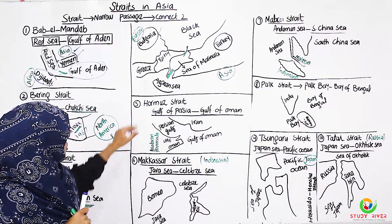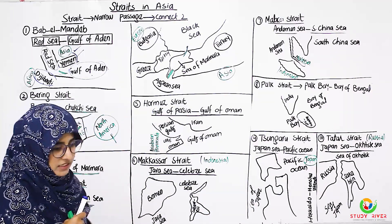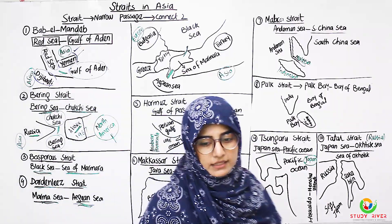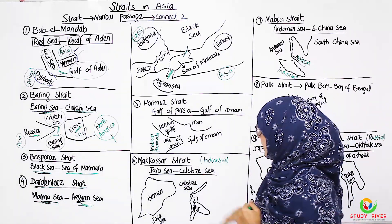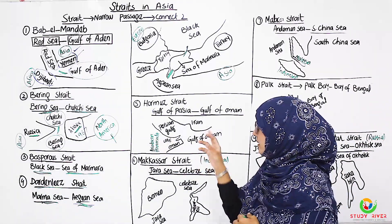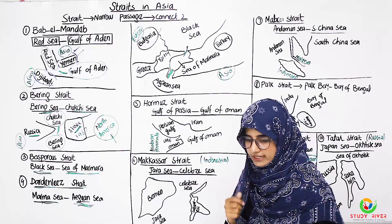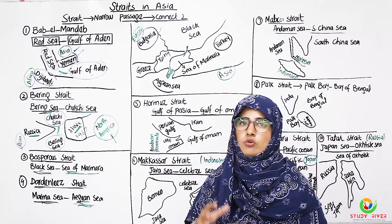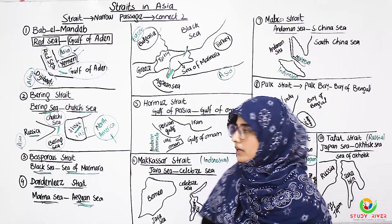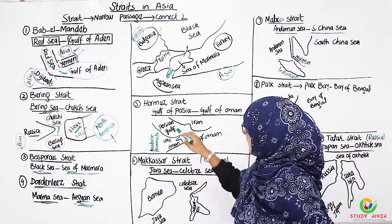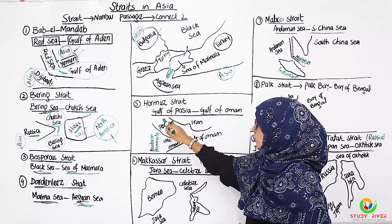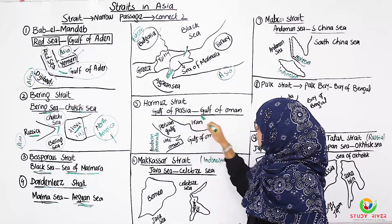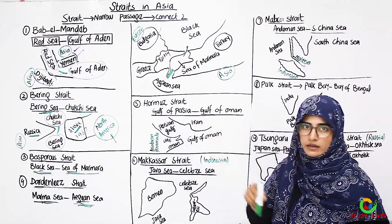Next is the Strait of Hormuz, which is very important. We can see which two water bodies it joins: one is the Persian Gulf and the other is the Gulf of Oman.